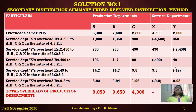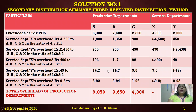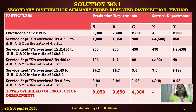This process keeps continuing until the service department column reaches zero. Y now has Rs. 49, which must still be redistributed to A, B, C, and X in ratio 3:3:2:2, giving 14.7, 14.7, 9.8, and 9.8. X then has 9.8, redistributed to A, B, C, and Y in ratio 4:3:2:1, giving 3.92, 2.94, 1.96, and 0.98.